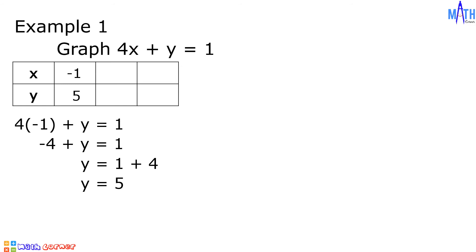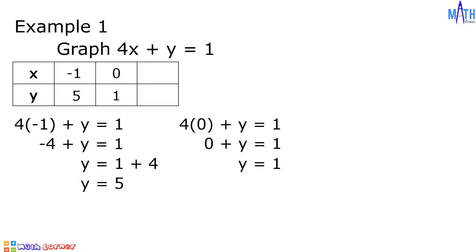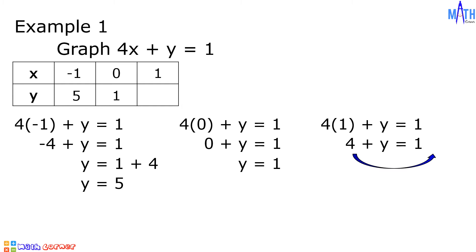If x = 0, then 4(0) + y = 1, so y = 1. We have the point (0, 1). If x = 1, then 4(1) + y = 1, giving 4 + y = 1. Transposing, y = 1 - 4 = -3. We have the point (1, -3).